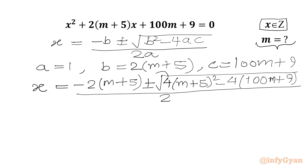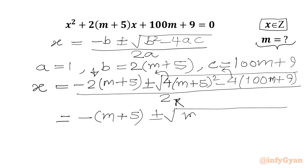Now we will plug in all the values. We take 4 common from inside the square root, which comes out as 2, and we already have 2 in the denominator, so we can simplify and write: x = -(m+5) ± √((m+5)² - (100m + 9)). The denominator 2 cancels out.